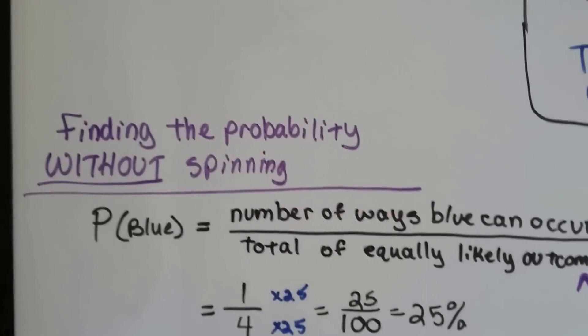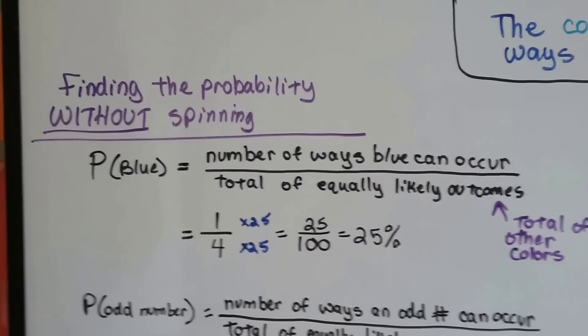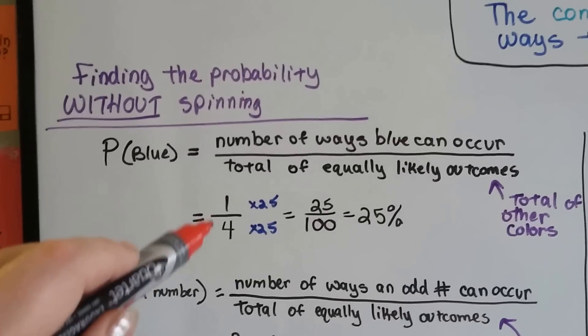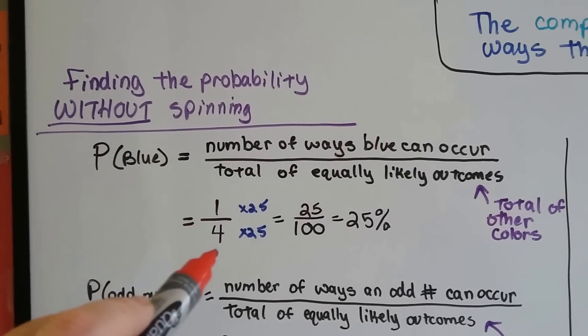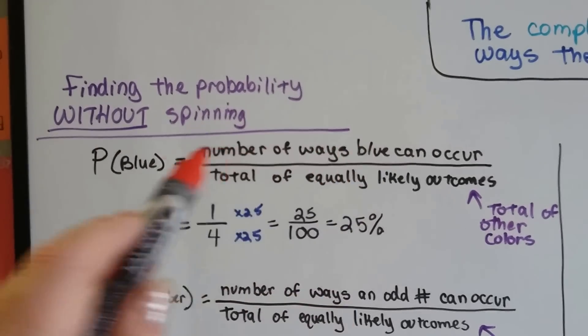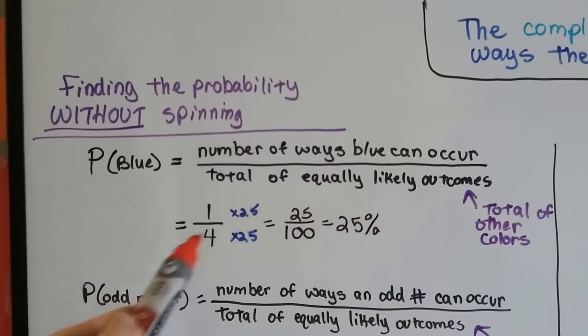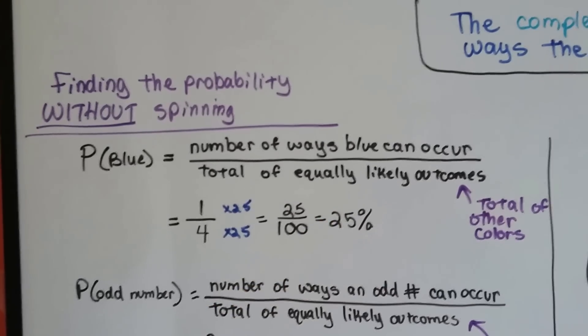But in theoretical probability, which is what this video is about, we're not going to spin it at all. We know that there's four colors. There's one blue one, so we've got one out of a four chance that it's going to land on the blue. The probability of it landing on blue is a one in four. The number of ways blue can occur, there's only one blue, and the total equally likely outcomes is four colors. So it's got a one in four chance of landing on the blue or a 25% chance.